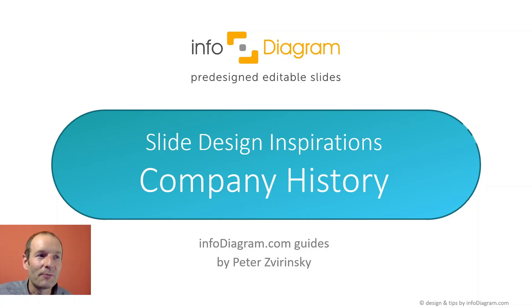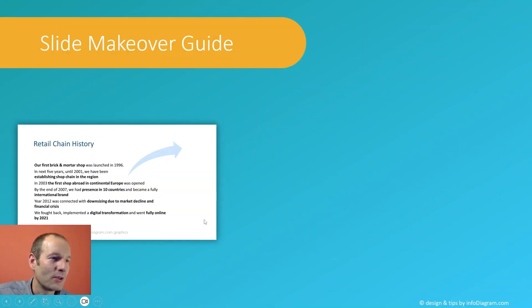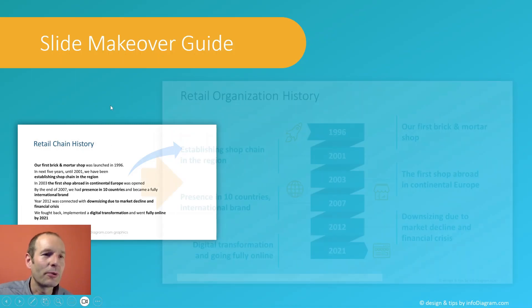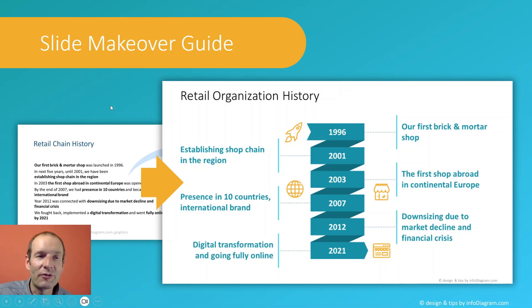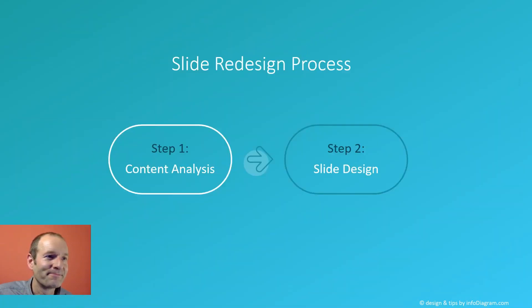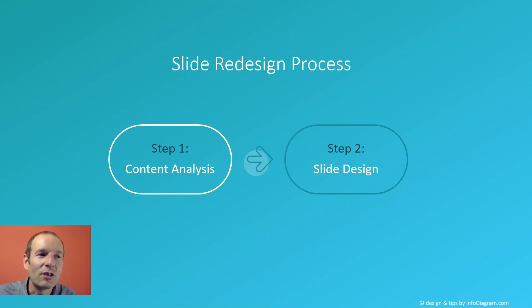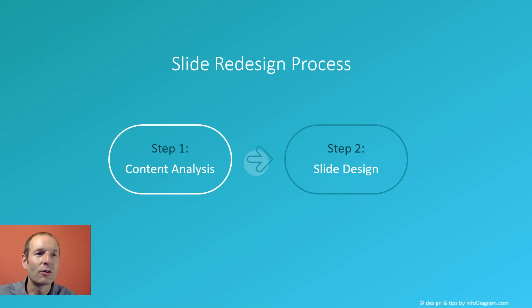We have a slide with text information about the history of a company, and I'm going to change it to a graphical form. Let me walk you through the steps of the slide redesign process. The first step should be the analysis of the content, because that will tell us what kind of diagram or visual form to use to express that content, and only then move to the slide design itself.